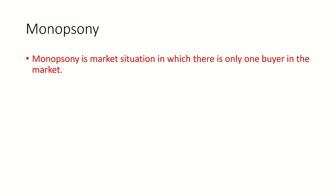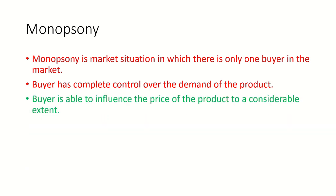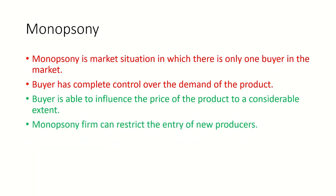Monopsony is a market situation where there is only one buyer. Mono means one and opsony means buyer. This single buyer has complete control over the demand of the product because demand is based on the requirement of this buyer. The buyer is able to influence the price of the product to a considerable extent due to their bargaining capacity, as they are the only buyer in the market.